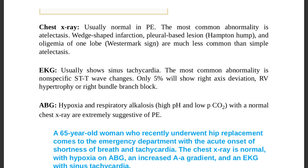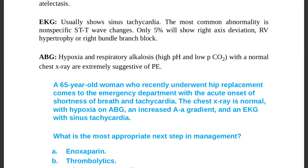ECG usually shows sinus tachycardia; the most common abnormality is non-specific ST to T-wave changes. Only five percent will show right axis deviation, right ventricular hypertrophy, or right bundle branch block. ABGs will show hypoxia and respiratory alkalosis — high pH and low PaCO2.